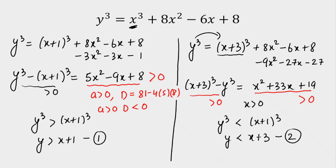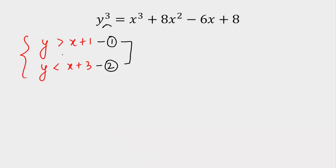From the first and second inequalities: y > x+1 and y < x+3. Since we are finding integer solutions, y must equal x+2. I will now plug y = x+2 into the original equation to find the specific values.